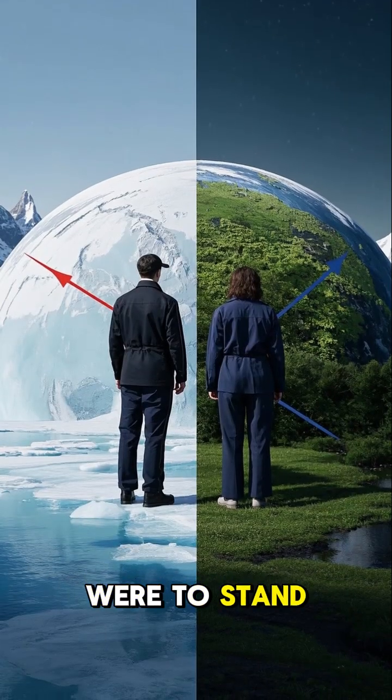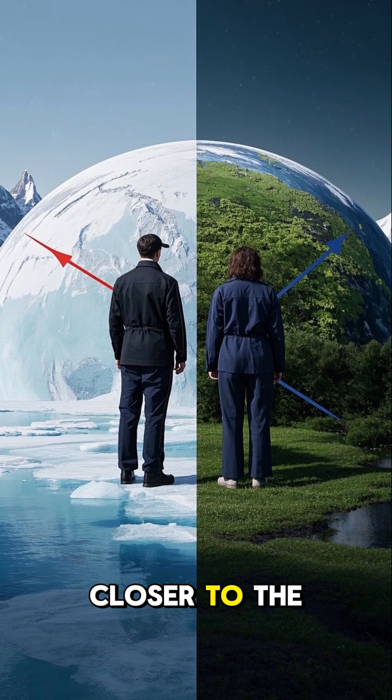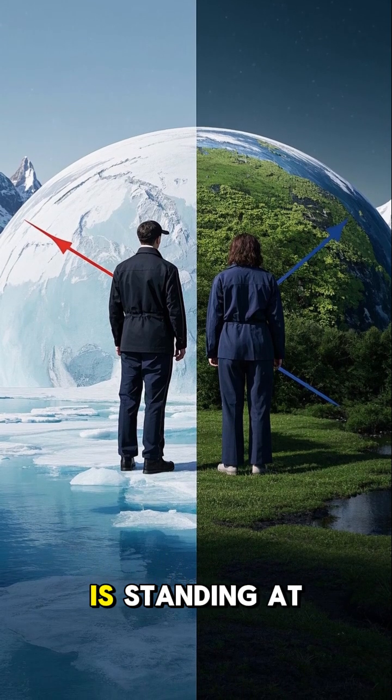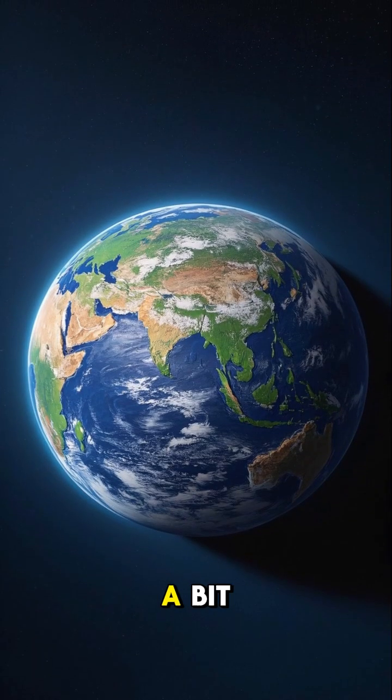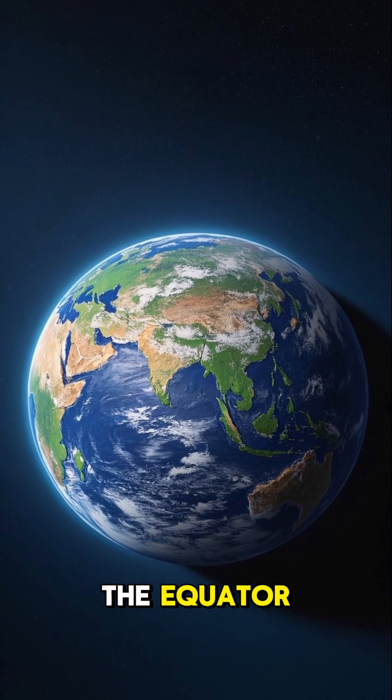So if you were to stand on the Earth at the North Pole, you would be closer to the center of the Earth than someone who is standing at the equator. Because of this, the Earth is a bit flatter at the poles and a bit wider at the equator.